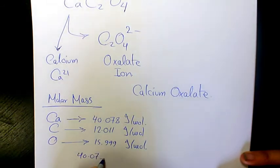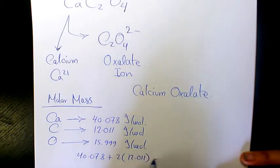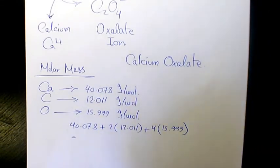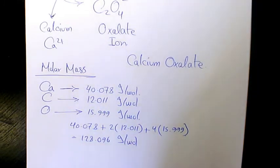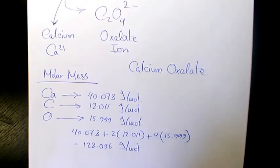So we have one calcium which is 40.078, two carbons which is two times 12.011, and four oxygens which is four times 15.999. That's going to make it 128.096 grams per mole. So that's the molar mass or molecular weight of calcium oxalate.